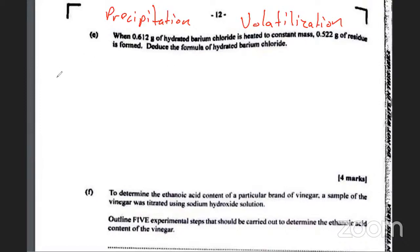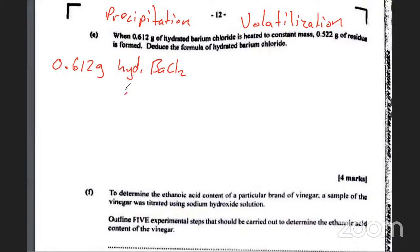2 grams of hydrated barium chloride is used. If it is hydrated, it contains water of crystallization. When you heat the hydrated salt, you remove the water, and it becomes anhydrous. The anhydrous barium chloride after heating has a mass of 0.522 g.